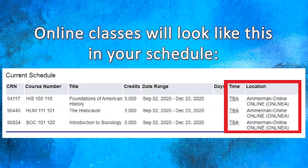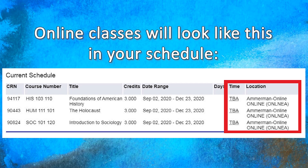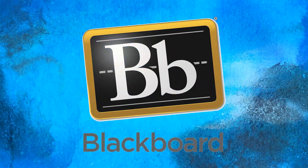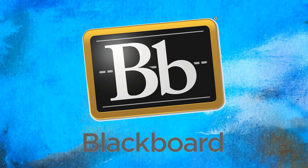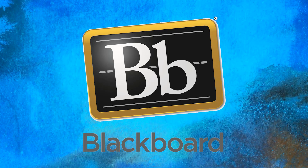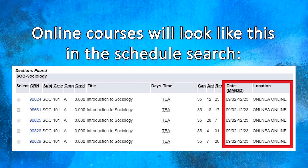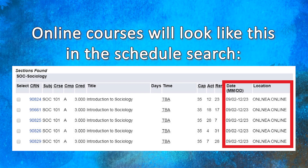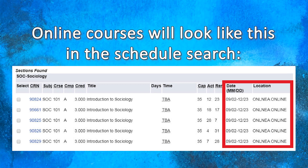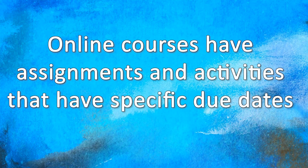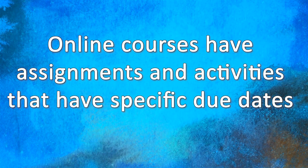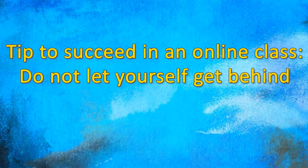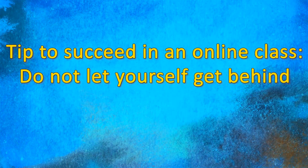If your class has the designation of online, your schedule will look like this. In online classes, instruction is provided by your professor through Blackboard, the college's learning management system, via the internet. Students interact with their faculty and classmates, and participate in activities and complete assignments working on their own time while meeting course due date requirements throughout the semester. Online courses are set up with assignments and activities that must be completed by certain due dates. In order to succeed in an online class, you should not let yourself get behind.